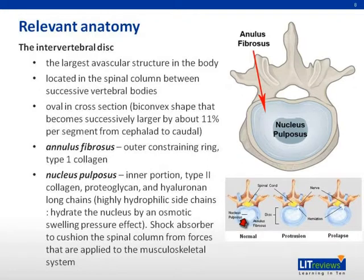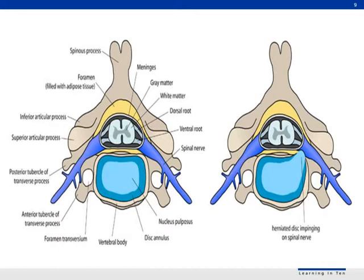These components have highly hydrophilic side chains, which hydrate the nucleus by an osmotic swelling pressure effect. It acts as a shock absorber to cushion the spinal column from forces applied to the musculoskeletal system. Together with two posterior facets, the anterior disc provides protection for the neural elements within the acceptable constraints of clinical stability.